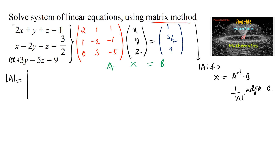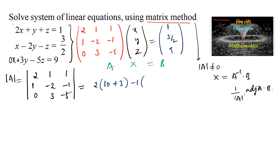det(A) = determinant of [2, 1, 1; 1, −2, −1; 0, 3, −5]. Expanding: 2[(−2)(−5) − (−1)(3)] − 1[(1)(−5) − (−1)(0)] + 1[(1)(3) − (−2)(0)] = 2[10 + 3] − 1[−5] + 1[3] = 26 + 5 + 3 = 34, which is not equal to zero.